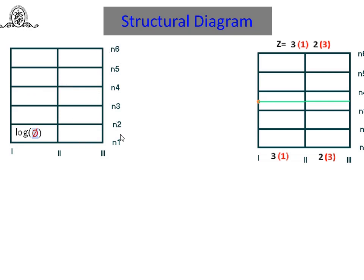We draw six horizontal lines for n1 up to n6, since z equals 6. Then we draw three vertical lines for shafts 1, 2, and 3 — that is shaft 1 as input, shaft 2 as intermediate, and shaft 3 as output. The gap between two horizontal lines equals log phi. This is step one. The vertical lines represent number of shafts: n plus 1 equals 3 shafts.